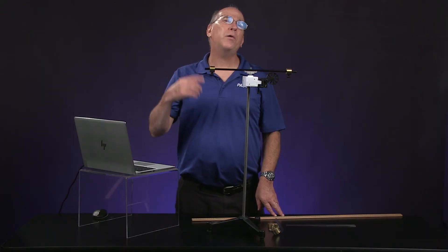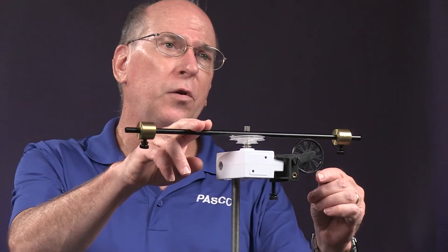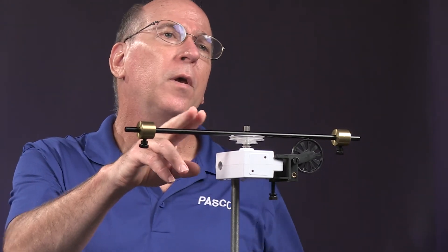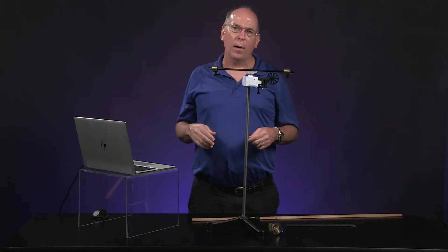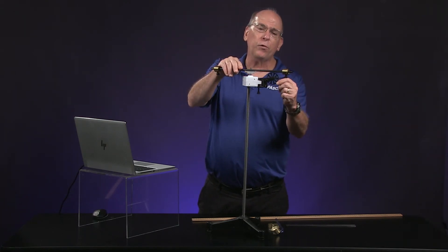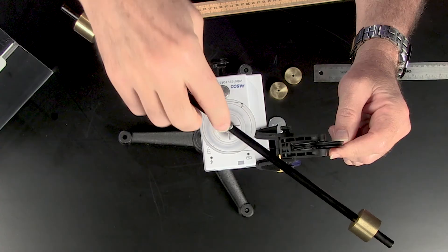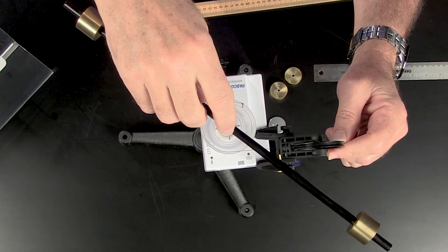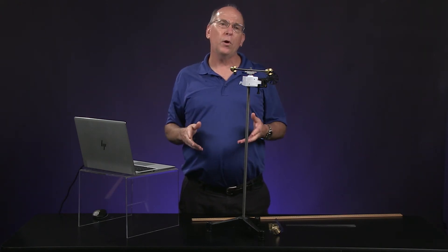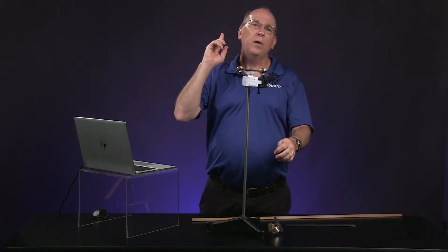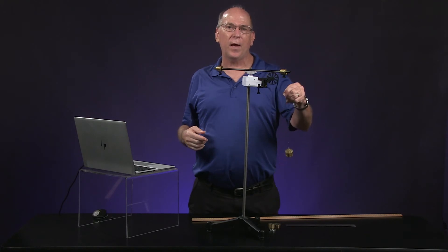In the analysis section, you'll complete the data table by calculating the net torque on the system. The net torque is the product of the force times the lever arm. In this case, the force is the tension in the string and the lever arm is the radius of the pulley groove where the string was wound. It's important to know that the tension in the string is not the weight of the hanging mass.